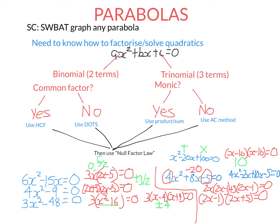Now we can use the null factor law. If the first bracket equals zero, x is positive 1 half. If the second bracket equals zero, x is negative 5 on 2. Those are the two solutions.